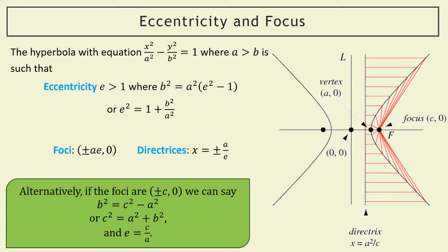If the foci are at plus or minus c, 0, then c equals a·e. Coming back up, a squared times e squared is c squared, so b squared equals c squared minus a squared, which rearranges to c squared equals a squared plus b squared — just like Pythagoras. Similarly, the eccentricity can be given by c over a. These forms can be quite useful: if you don't want to find eccentricity first you can go straight to c squared equals a squared plus b squared, or use e equals c over a.